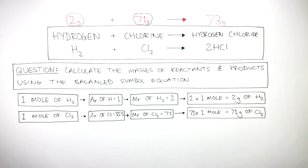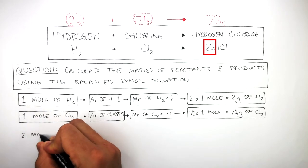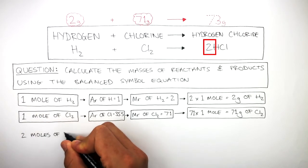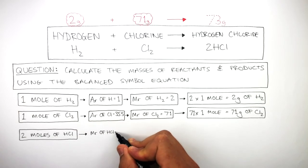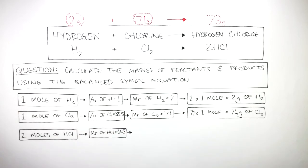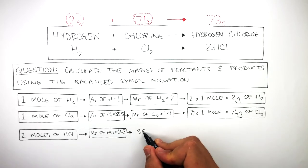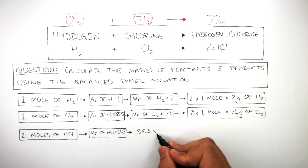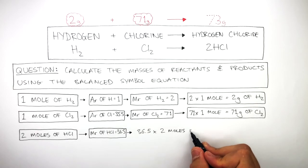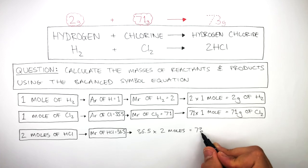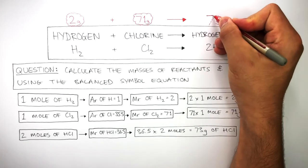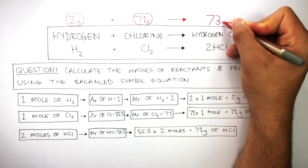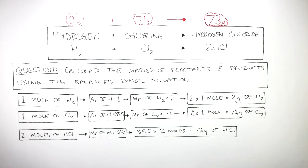Let's see if this is the case. The equation shows us there are 2 moles of HCl and the MR of HCl is 36.5. So 36.5 times 2 moles equals 73 grams of HCl. So the equation is correct — 73 grams of HCl is produced.